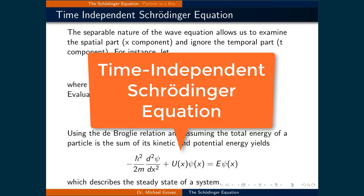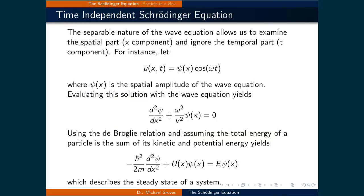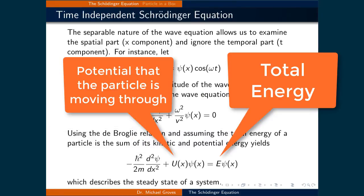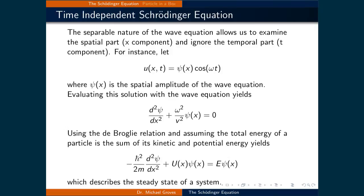This is called the time independent Schrödinger equation, and it describes the steady state of a system. H bar is called the reduced Planck's constant, and it's just h divided by 2 pi. E is the total energy of the system, and U is the potential that a particle of mass m is moving in. There is a time dependent version of this equation, however many problems can be solved by looking solely at the steady state solutions.